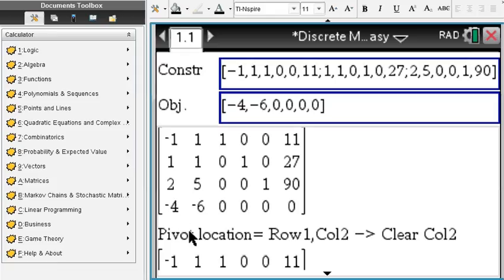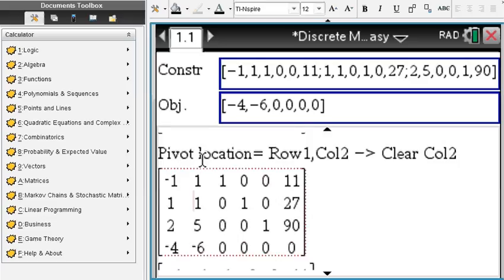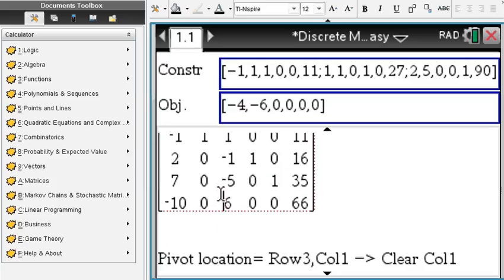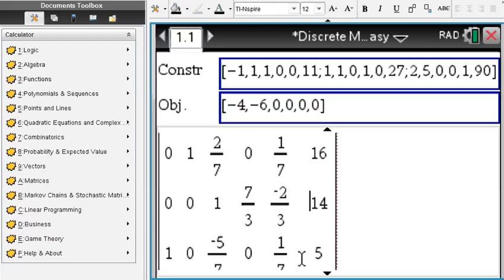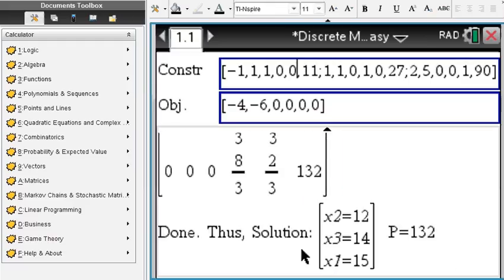Then of course you do the usual procedure in a simplex algorithm: you find the pivot locations, etc. Pivot locations are found step-by-step. We're clearing the corresponding column and do this procedure until we arrive at the final solution. In this case, the variables x1, x2, x3 have these values, and that gives us a P for profit of 132, everything step-by-step.